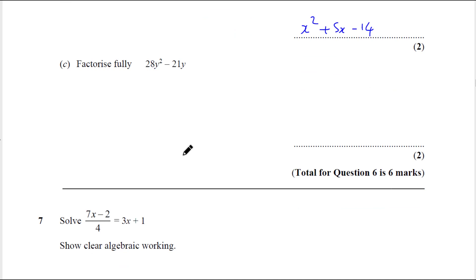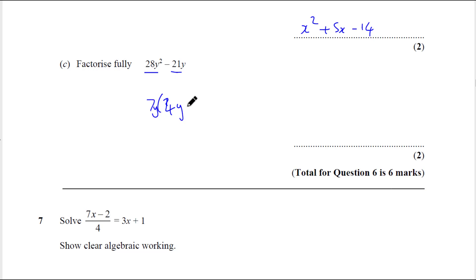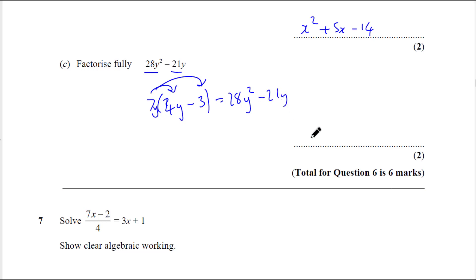Most people clean this up, but if you just expand the bracket: x squared minus 2x plus 7x minus 14. If you get 3 out of 4 terms correct that's normally one mark, and the final answer — minus 2 plus 7 makes plus 5x — so it's x squared plus 5x minus 14. Factorize fully: the highest common factor of 21, 8, and 21 is 7. There's a y in both, so take the y out, giving 7y(4y minus 3). It's not worth losing marks on a question like this.